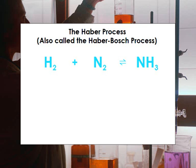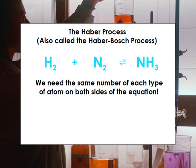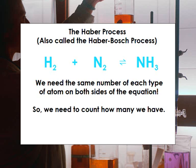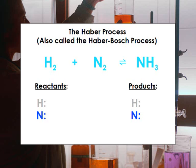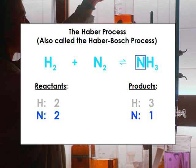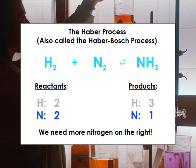Now, let's get to the main point of this video and balance this equation. In order for the equation to be balanced, we need to have exactly the same number of each type of atom on each side. The first thing we need to do is count how many of each type of atom we have on each side. For the reactants, on the left-hand side, we have two atoms of hydrogen from the H2, and two atoms of nitrogen from the N2. For the products, on the right-hand side, we have three atoms of hydrogen, but we only have one atom of nitrogen, and we need to have two to match what we have on the left-hand side.